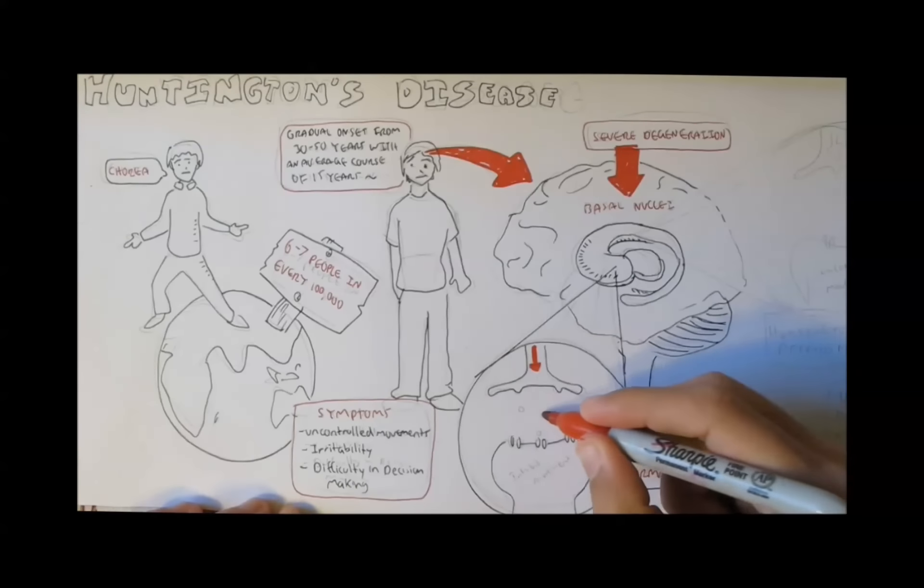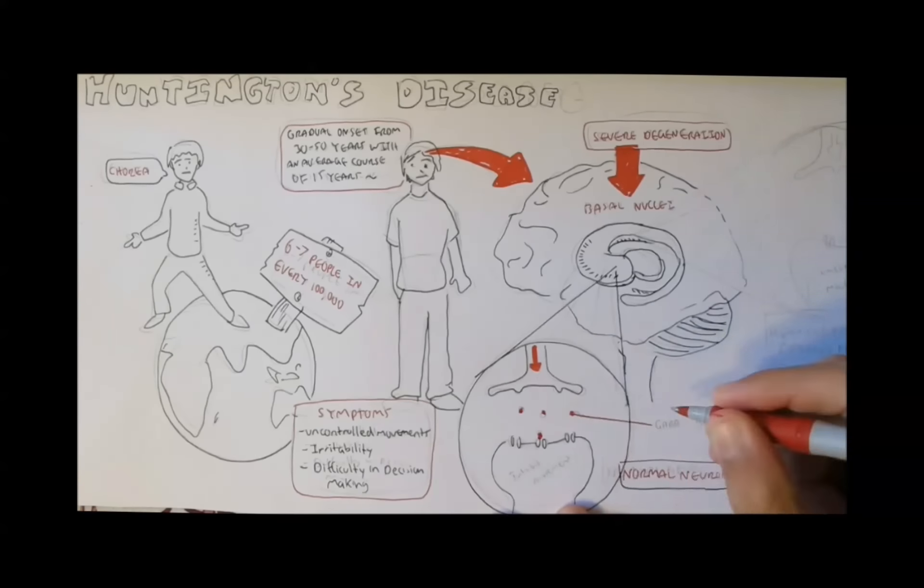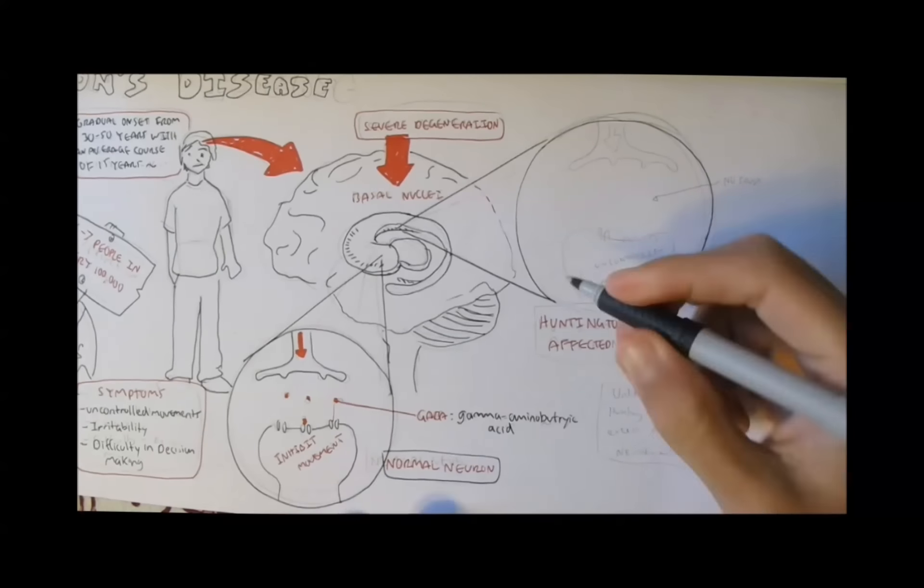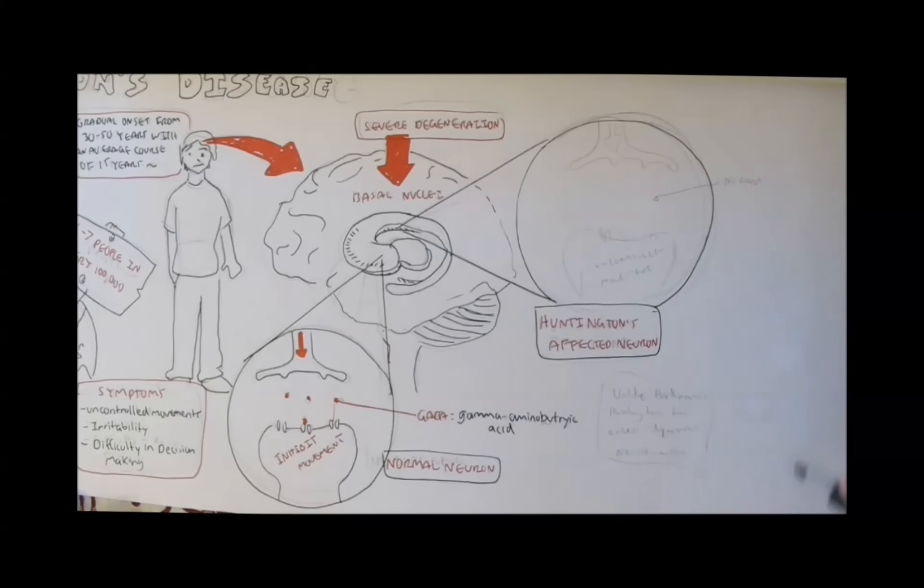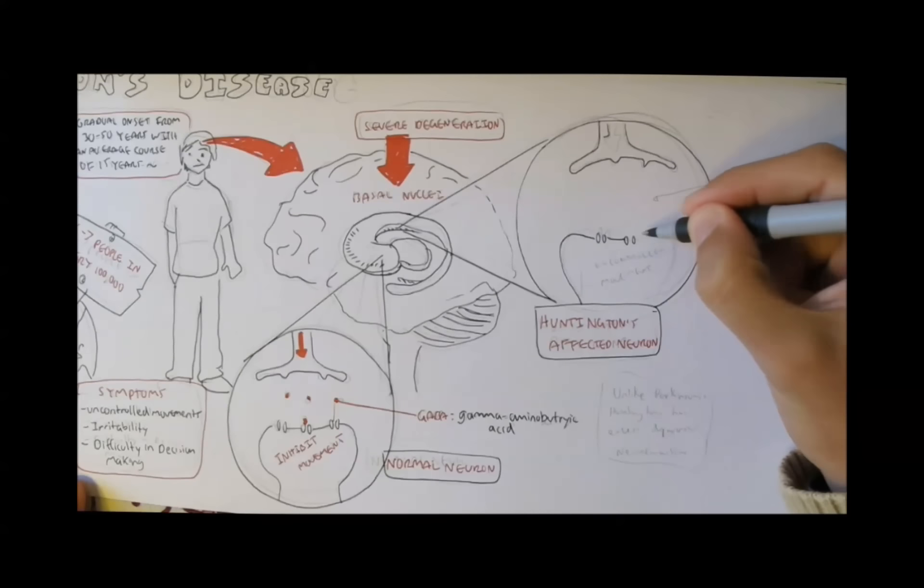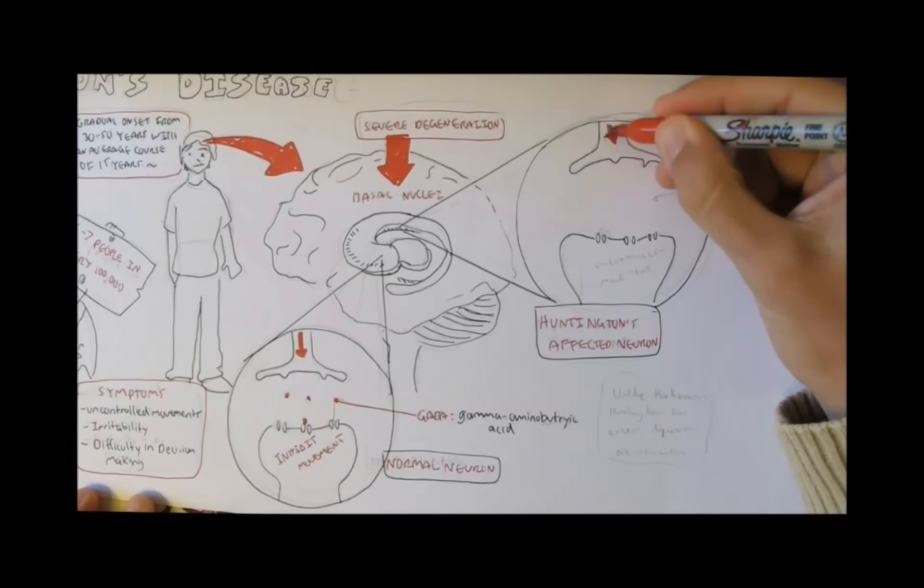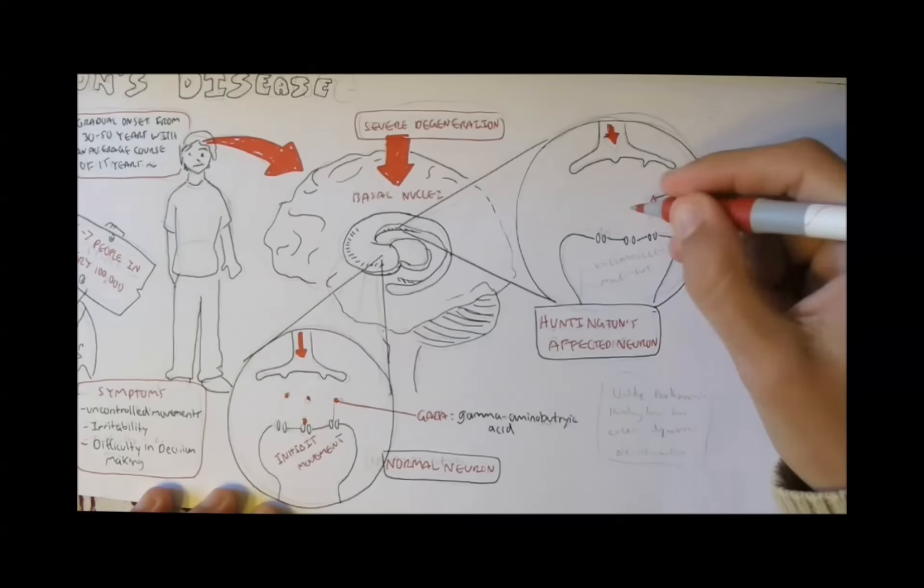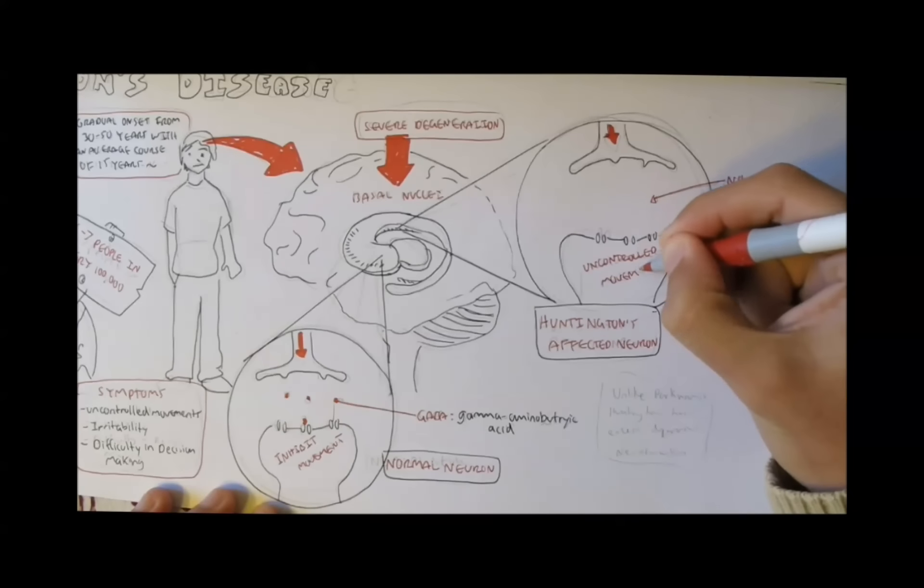In a normal brain, GABA is secreted, which will basically prevent a movement. For example, if you want to stop your arm, your cells secrete GABA. GABA stands for gamma-aminobutyric acid. In a Huntington's disease-affected neuron, there is degeneration of neurons which secrete GABA, which causes uncontrolled movements, because there is no GABA to stop movements.